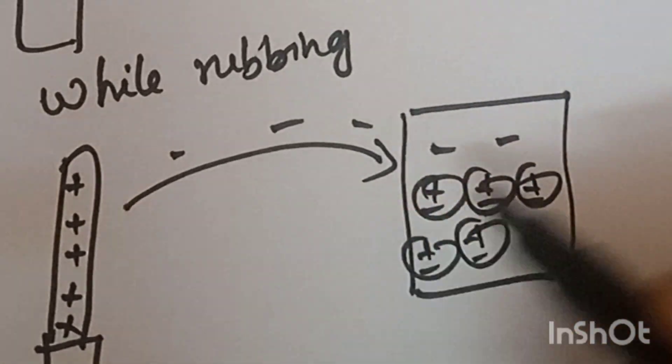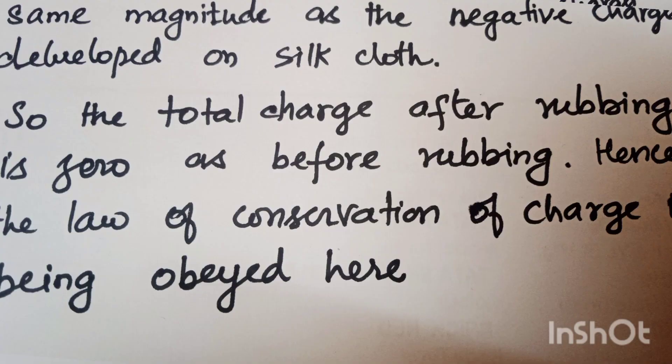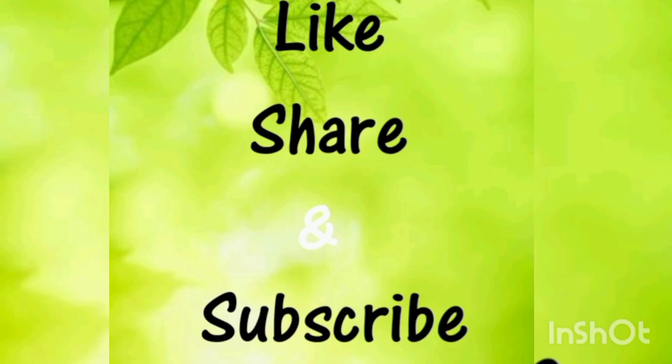It is observed that the positive charges developed on the glass rod has the same magnitude as the negative charges developed on the silk cloth. So the total charge after rubbing is zero as before rubbing. Hence, the law of conservation of charge is being obeyed here.